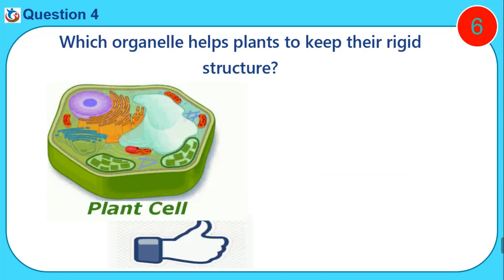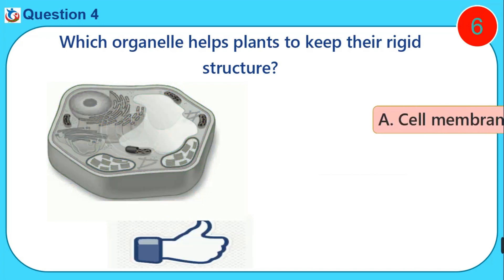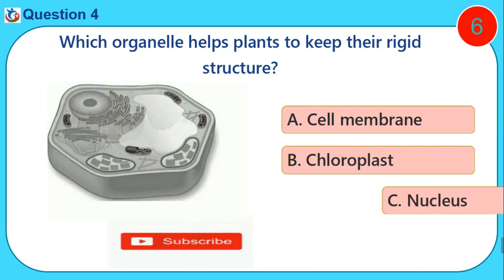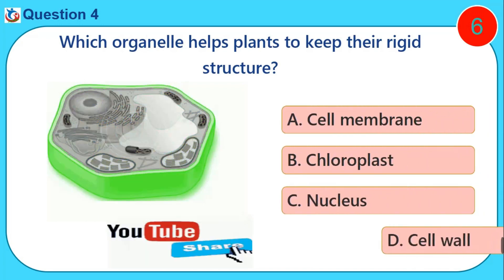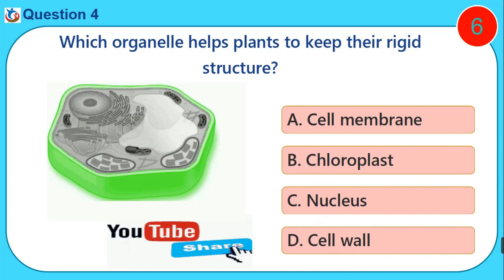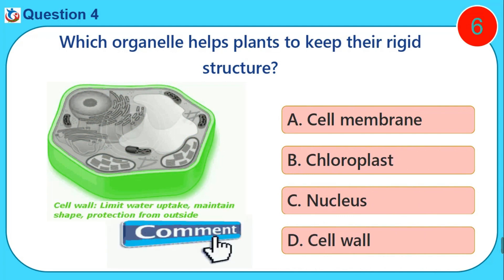Which organelle helps plants to keep their original structure? A. Cell membrane. B. Chloroplast. C. Nucleus. D. Cell wall.